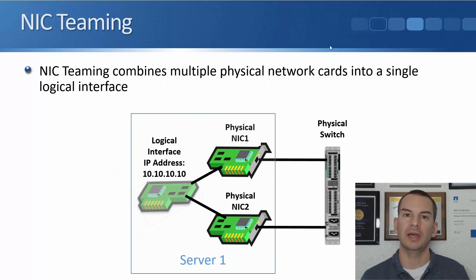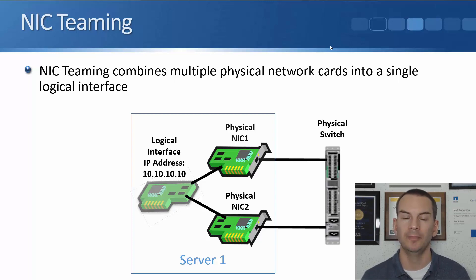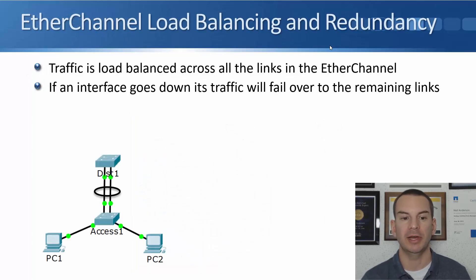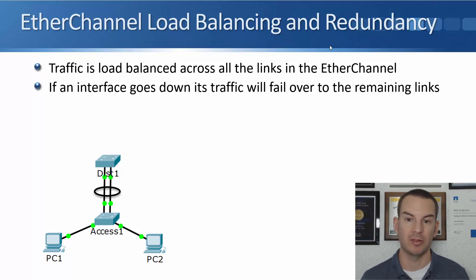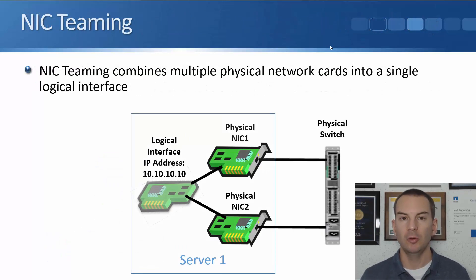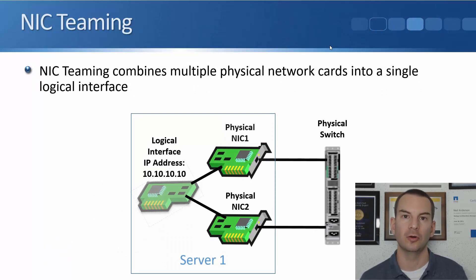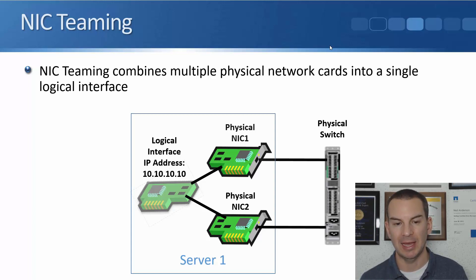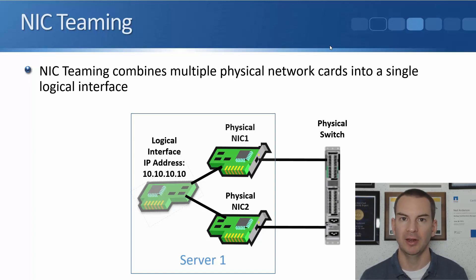We can do basically the same thing on our servers with NIC teaming. EtherChannel is where we bundle multiple physical ports into a single logical port on our inter-switch links. On our servers, with NIC teaming, we can bundle multiple physical network cards into a single logical interface. The benefit is we get load balancing and redundancy, and because the operating system sees it as a single interface, we just have one IP address, which makes things much more convenient and simple to configure.